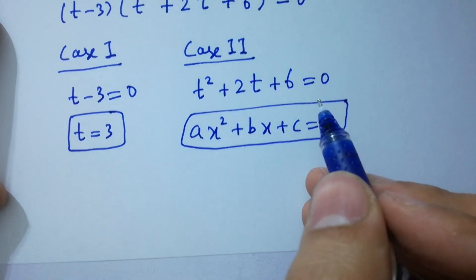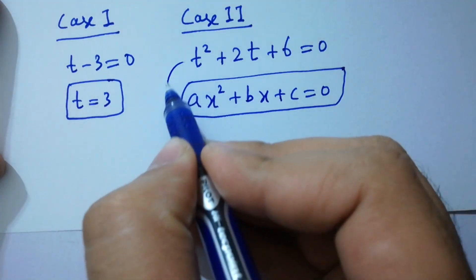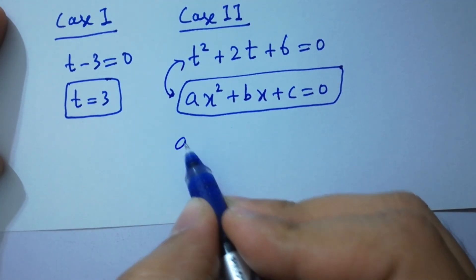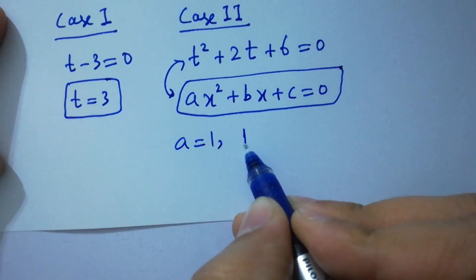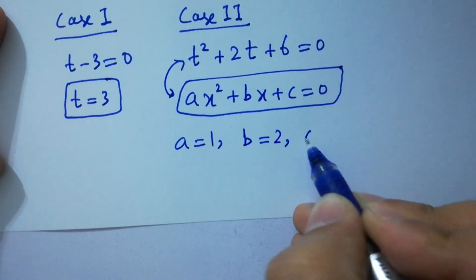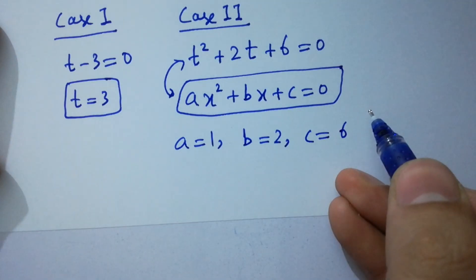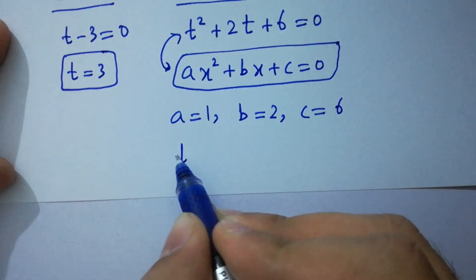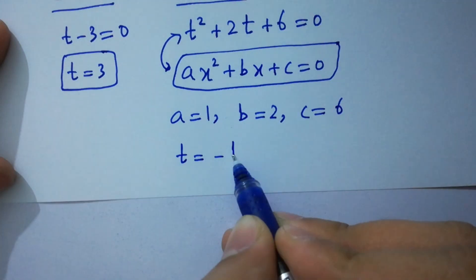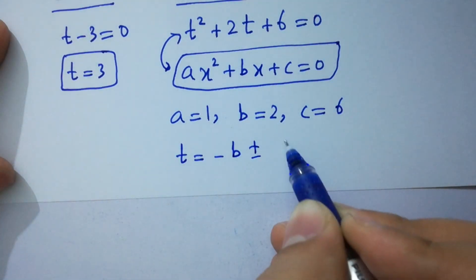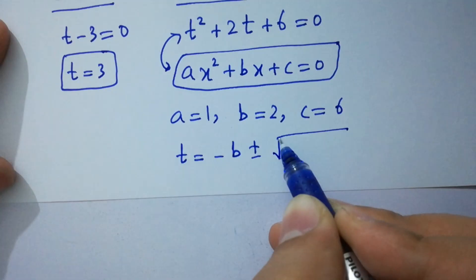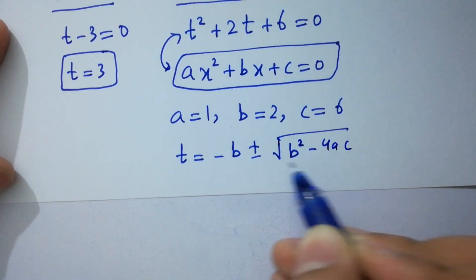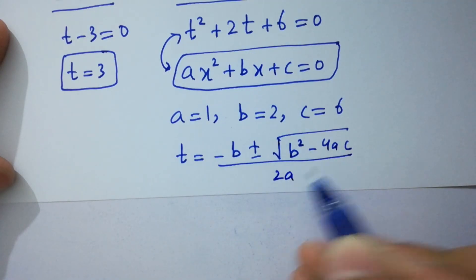By comparing, we have a equal to 1, b equal to 2, and c equal to 6. Now apply the quadratic formula: t equal to minus b plus minus square root of b squared minus 4ac, over 2a.